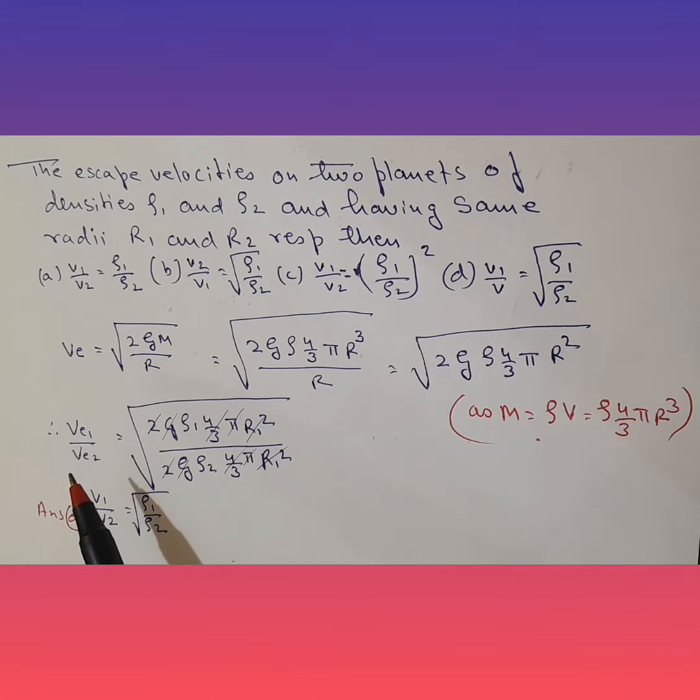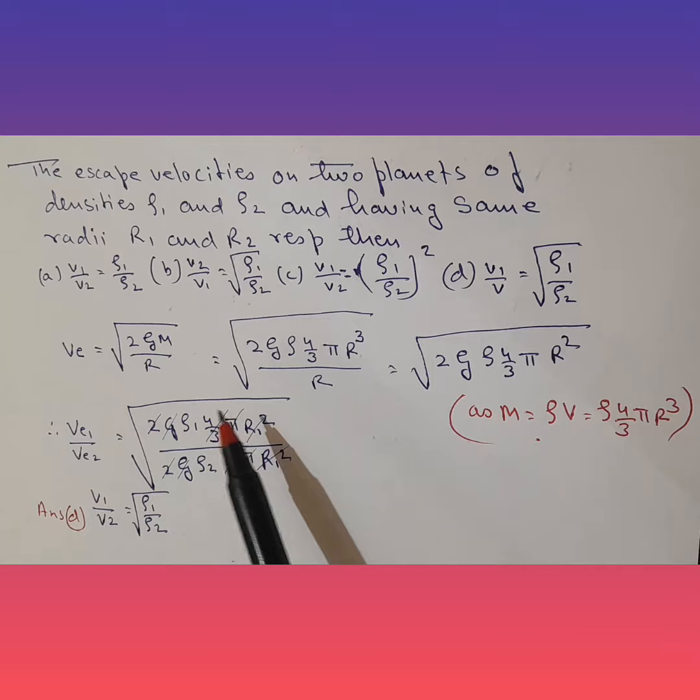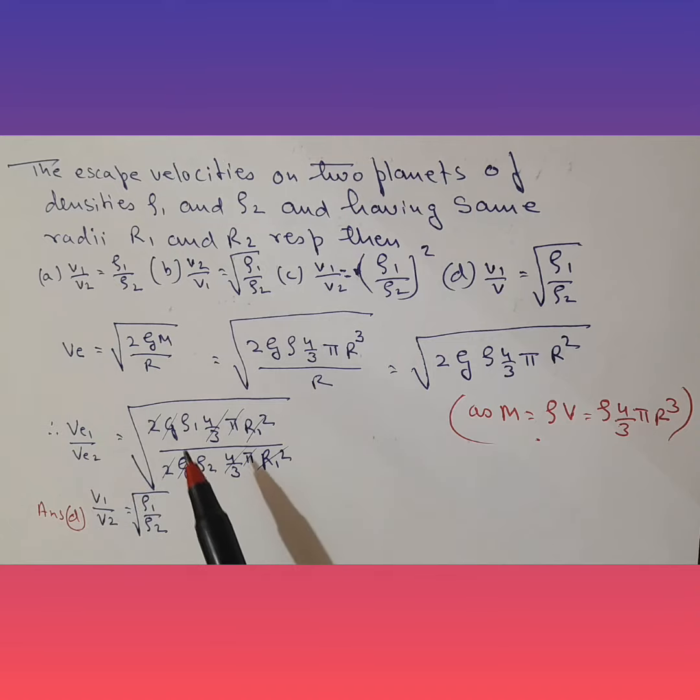So now what we intend to find is ratios of escape velocities. This is the formula for escape velocity for planet 1 and this is the formula for planet 2. Now we find that most of the things get cancelled except ρ₁ and ρ₂, so ρ₁ and ρ₂ remain in root and that's our answer.